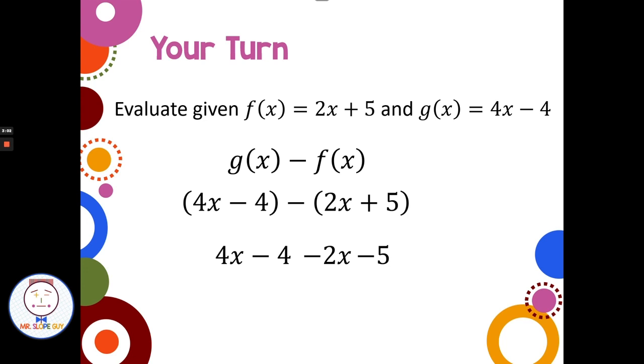Now it's just a matter of combining like terms. We have a 4x and a negative 2x, and they combine to be 2x. And then we have two constants, the numbers without variables. We have a negative 4, or subtract 4, and a negative 5, or subtract 5. And those combine to be negative 9.